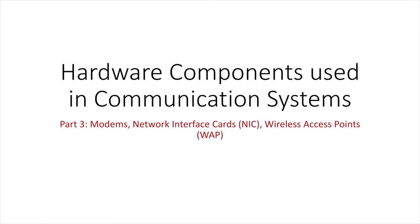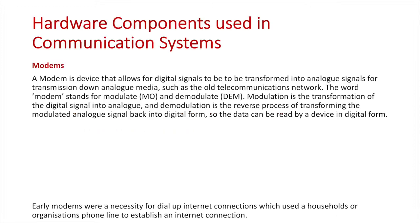Hardware Components Used in Communication Systems Part 3: Modems, Network Interface Cards, and Wireless Access Points. Firstly, we're going to take a look at modems. What a modem is essentially used for is to transmit digital signals — which is how data exists within computerized systems — into analog signals, which is how signals used to be transmitted over wide area networks, because the actual mediums were analog mediums requiring electrical currents traveling down wires, due to the old telecommunications network that existed long before digital computers were in people's homes.